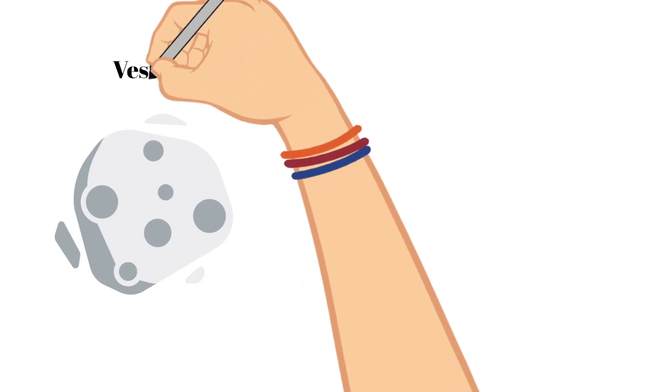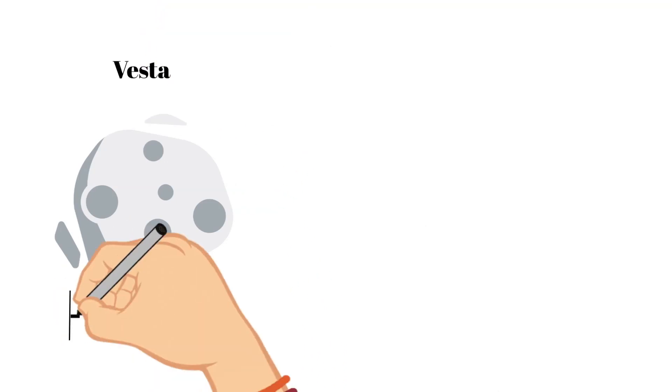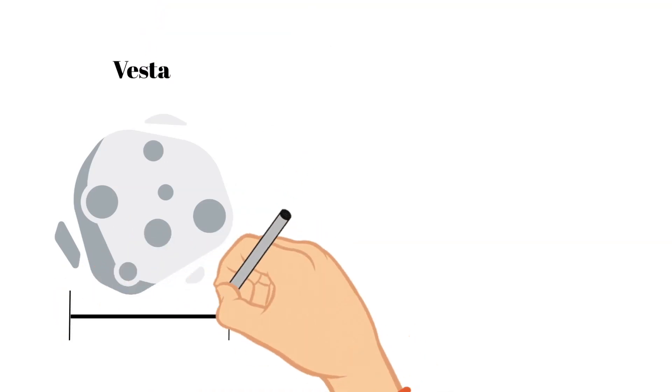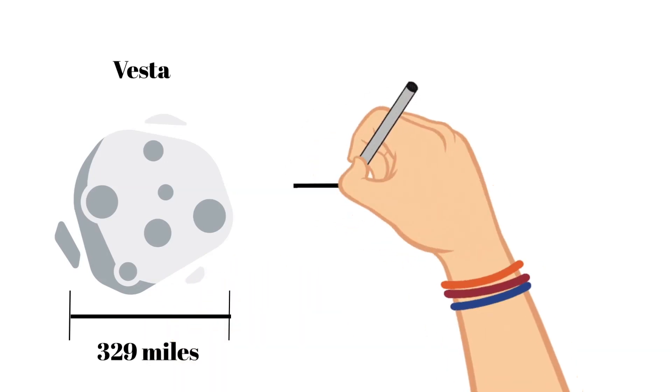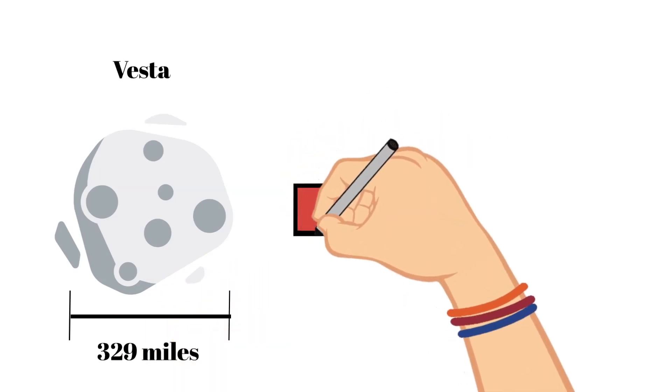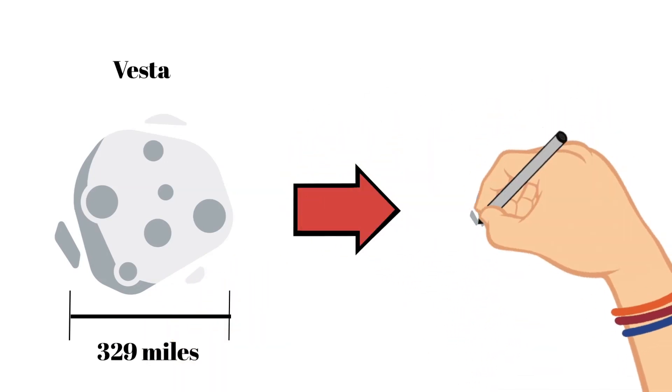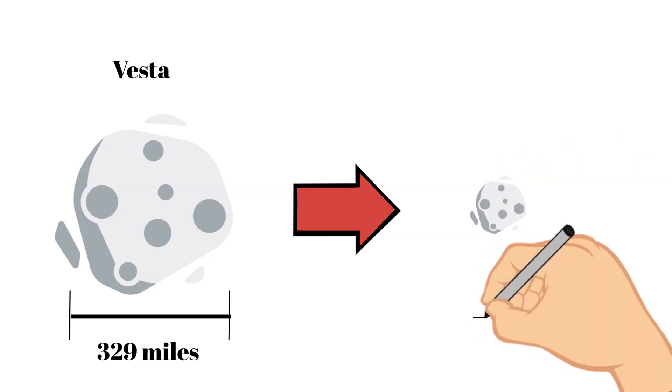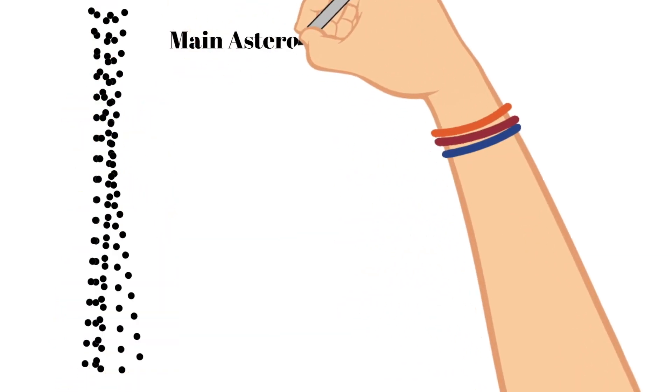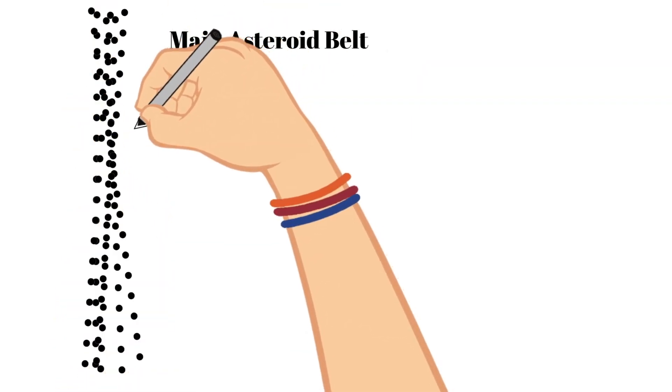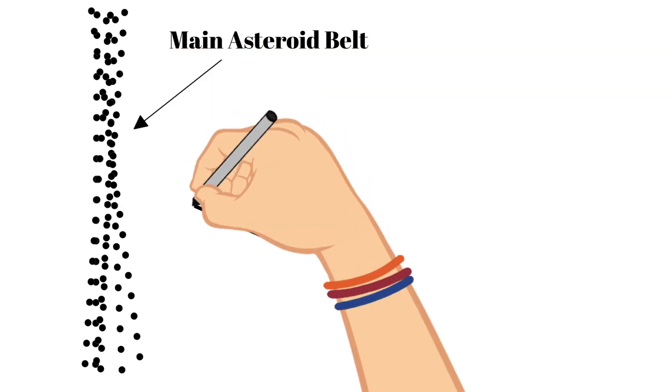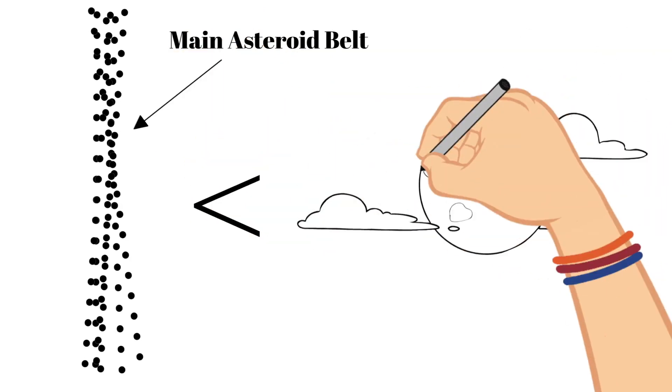Most asteroids range in size from Vesta all the way down to smaller sizes around 33 feet across. One interesting fact is that if you combined all the asteroids in the main asteroid belt, its total mass would be less than that of the Earth's moon.